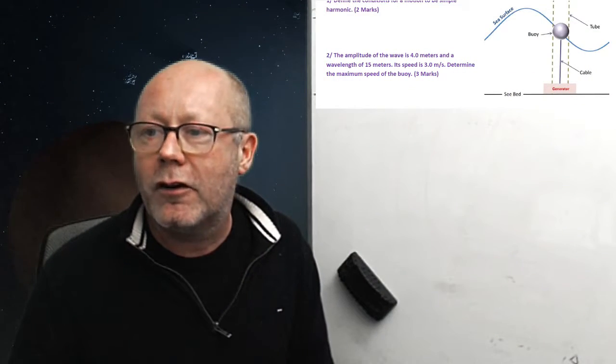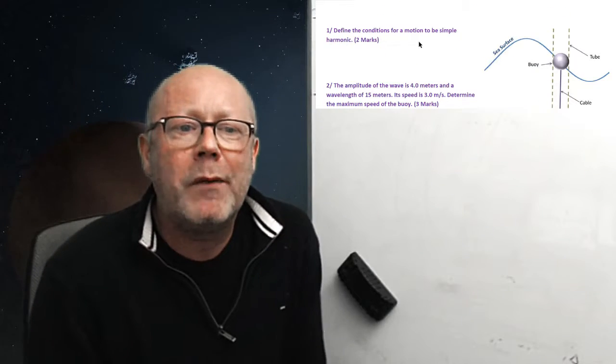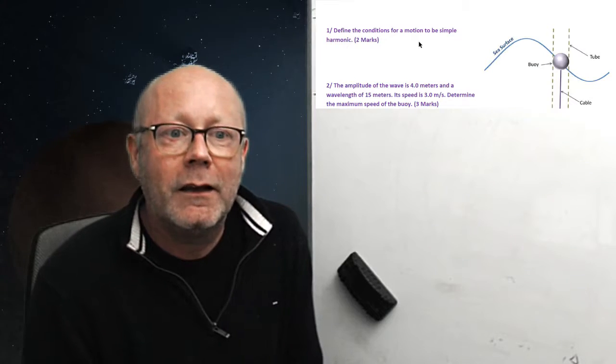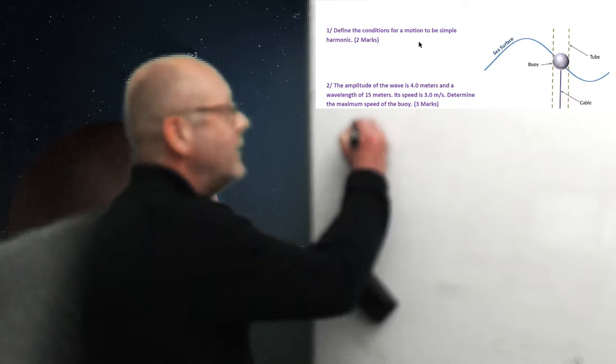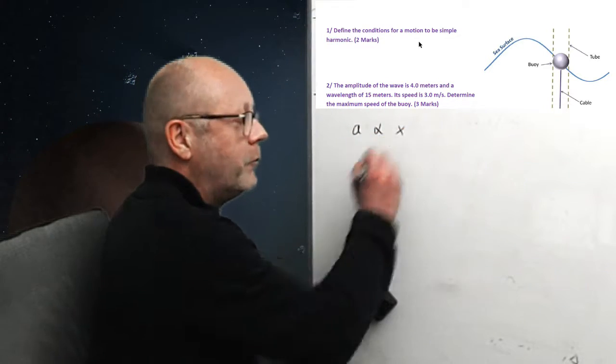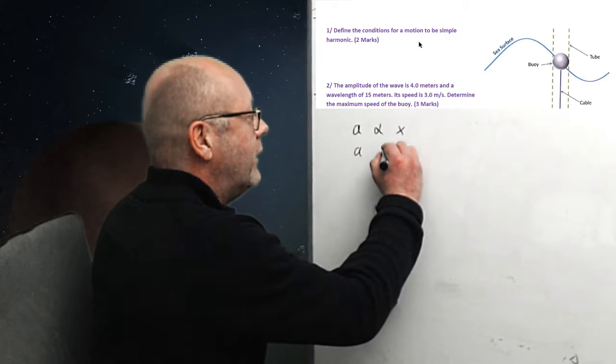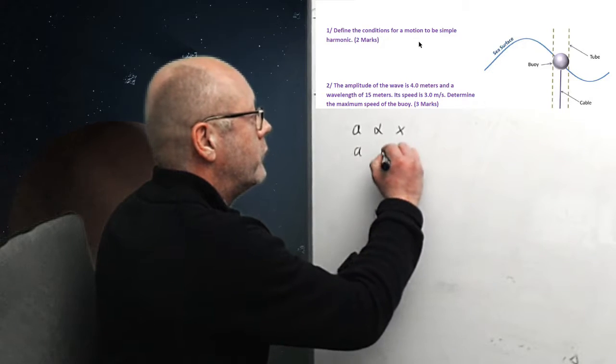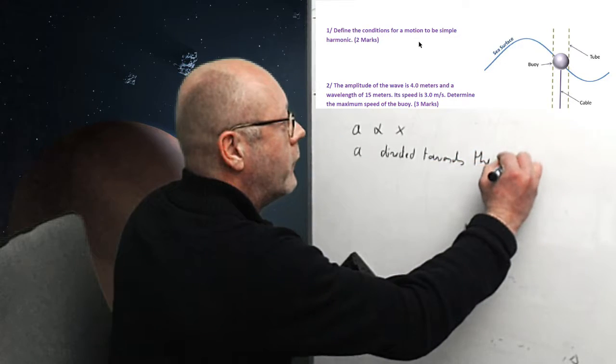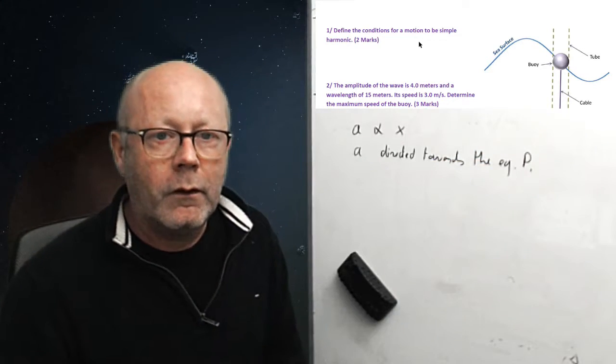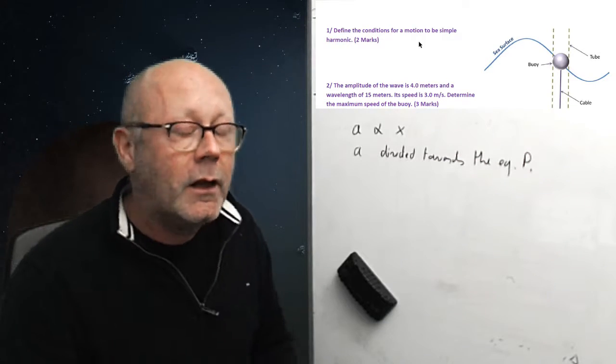So, let me put the question on. Right, so what is a simple harmonic motion? Well, it's a motion defined by two characteristics. The acceleration is proportional to the displacement. And the acceleration is directed towards the equilibrium point. You can also say that the acceleration is of opposite sign to the displacement. These are the two marks.